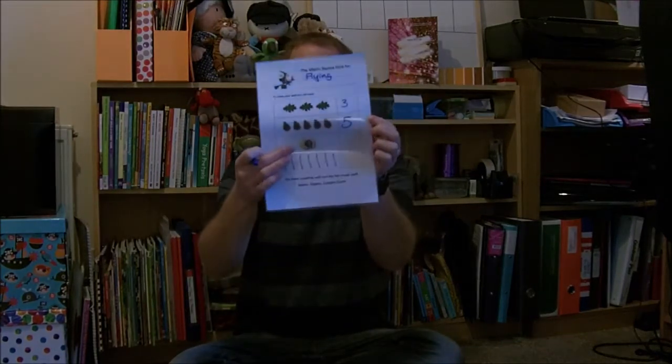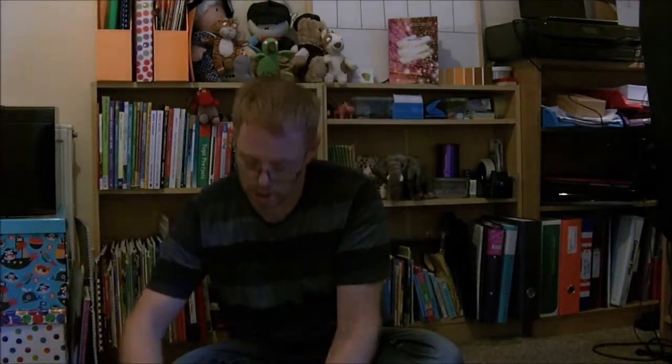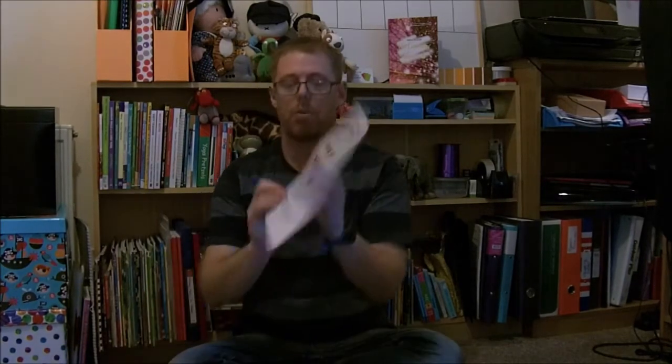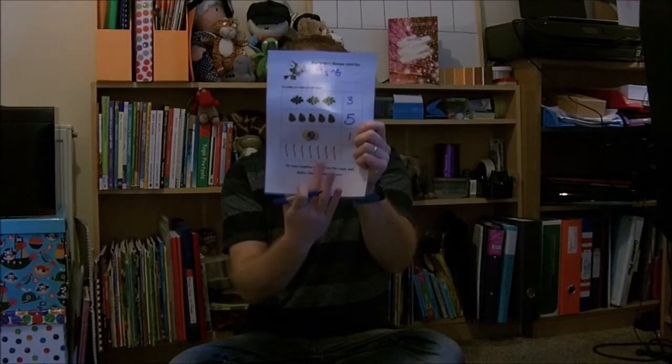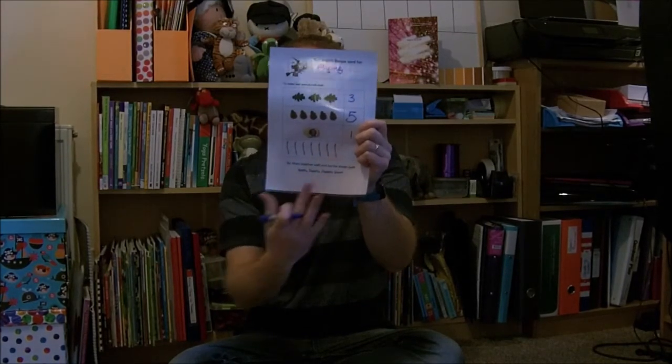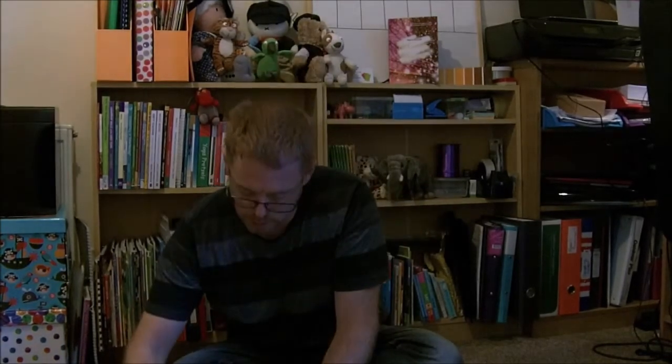Just the one conker we need for this one. And then we've got quite a big number coming up: one, two, three, four, five, six, seven twigs. So we need seven twigs.